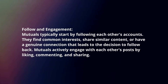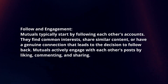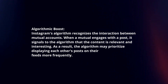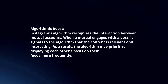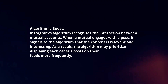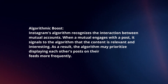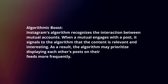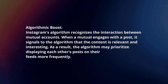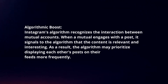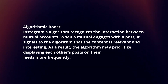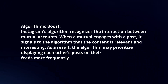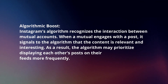Mutuals actively engage with each other's posts by liking, commenting, and sharing. Instagram's algorithm recognizes the interaction between mutual accounts. When a mutual engages with a post, it signals to the algorithm that the content is relevant and interesting. As a result, the algorithm may prioritize displaying each other's posts on their feeds more frequently.